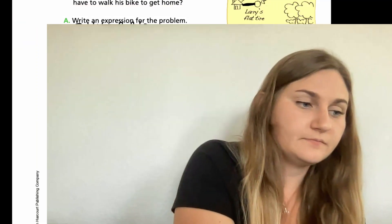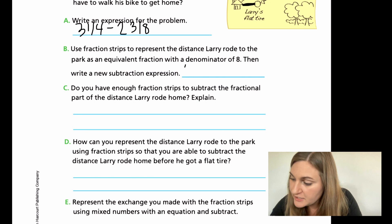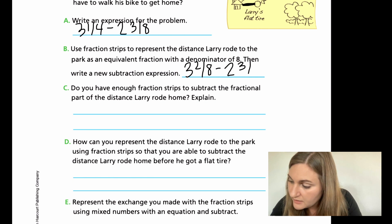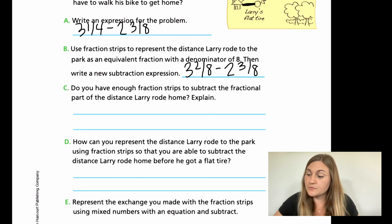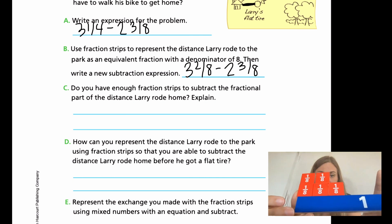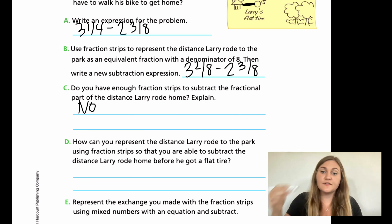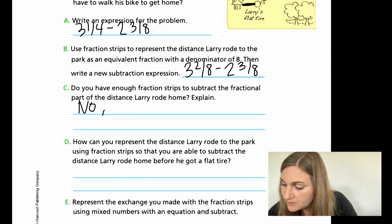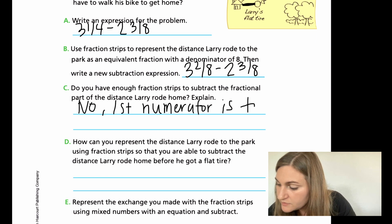Let's write this down using our new equivalent fractions. I have three and one fourth, which I changed to three and two eighths, and I'm subtracting two and three eighths. For C, do you have enough fraction strips to subtract the fractional part? Do you have enough in your two eighths to subtract your three eighths? No — the bottom is bigger. So the first numerator is too small.